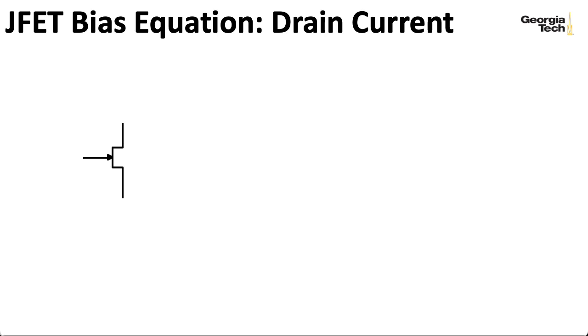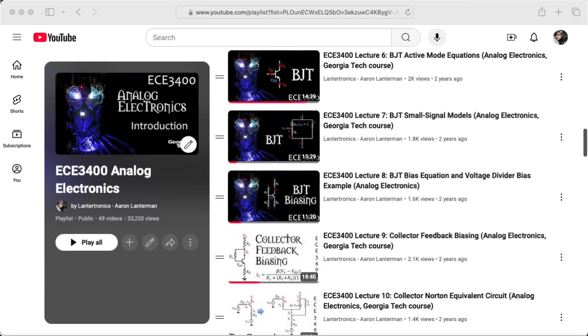In this lecture, we'll talk about biasing JFETs. I'm going to assume that you are familiar with the concepts of a DC bias circuit and a small signal circuit that goes along with it. If you're not, I recommend that you go back and check out some of my lectures on the topic in the context of the BJT.